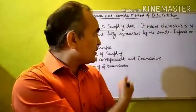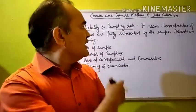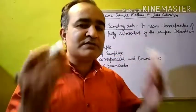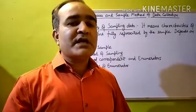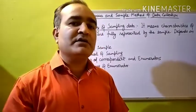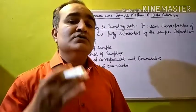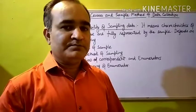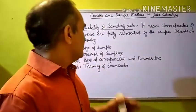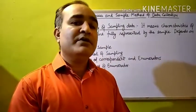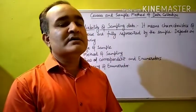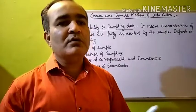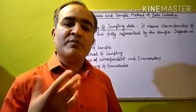Let us discuss these in detail. Reliability of sampling data means that the characteristics of the universe or population are fully represented by the sample which we have picked. If not, the information will not be reliable. The first factor is the size of sample — reliability of sample data depends on the size of sample which we have picked.